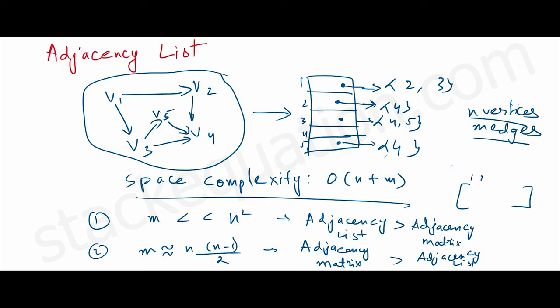When the number of edges is far less than the number of vertices, it's almost a sparse graph, so it doesn't make sense to represent such a large number of vertices in the form of a matrix, because most of the elements would be zero. When we have a sufficient number of edges — m equivalent to n(n-1)/2 — then using an adjacency matrix makes sense.